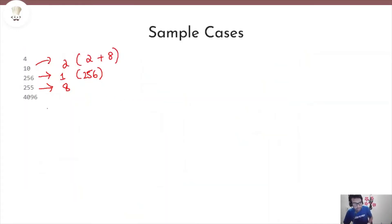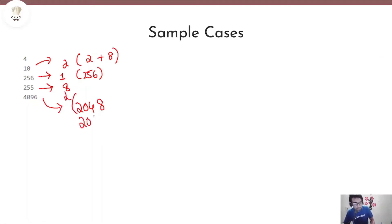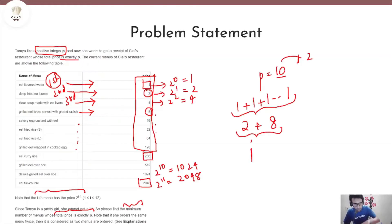For P=4096: since the largest menu item has the price 2048, the minimum number of menus that have to be ordered to meet the price 4096 are two menus, each of price 2048, because 2048 plus 2048 equals 4096. So the answer in this case is 2.